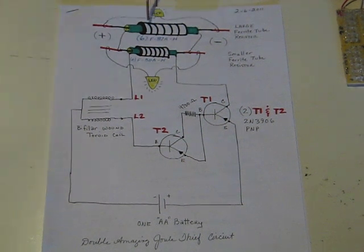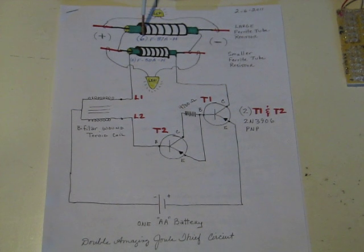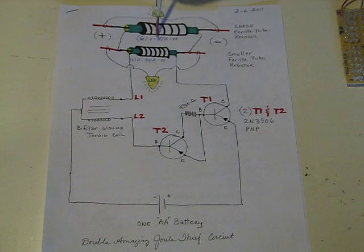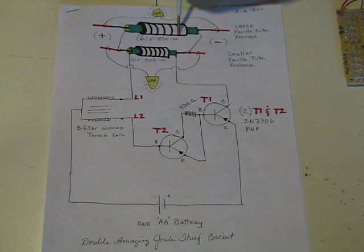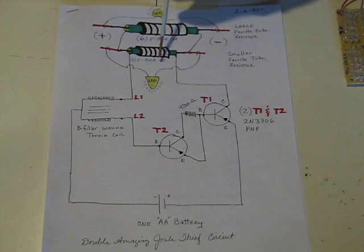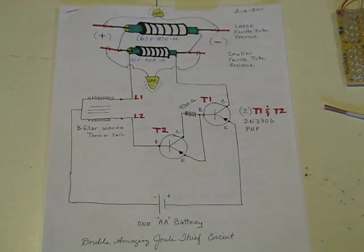The ferrite cores on the big one, I used six of them: one, two, three, four, five, six. And they are an F-87A-8. The littler ones are an F-50A-H. There's the double amazing jewel thief circuit.